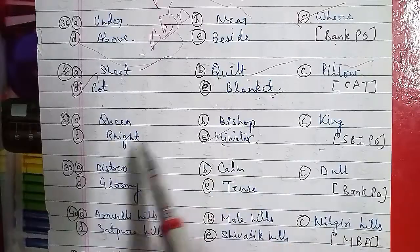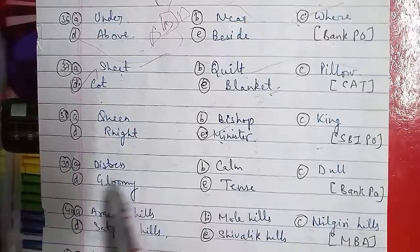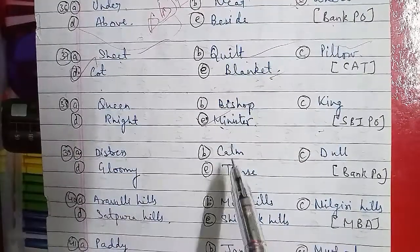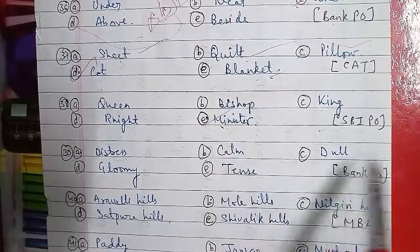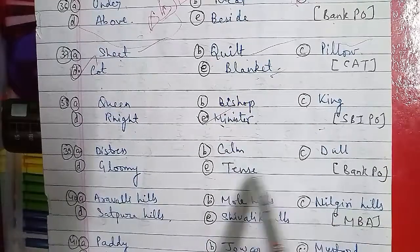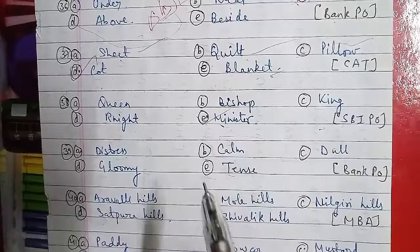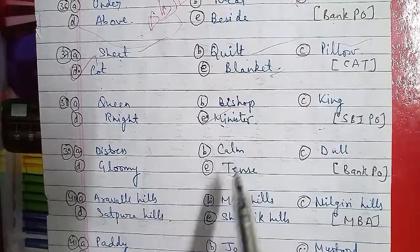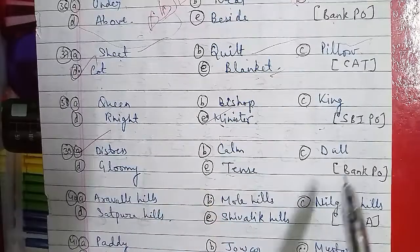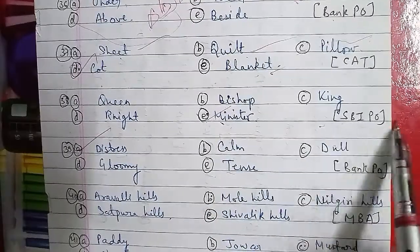Question number 39: Option A is Distress, B is Calm, C is Dull, D is Gloomy, and E is Tense. Calm, Dull, Gloomy, and Tense are all facial or mood expressions. Distress is not in the same category of phase expressions. So Distress is the odd one out.